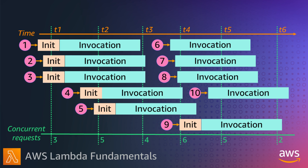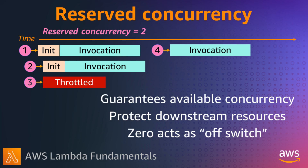There are some controls you can use to manage concurrency with some helpful use cases. You can use reserved concurrency to allocate a maximum concurrency limit for a given function — a maximum number of requests a function can run in parallel. Here I've set reserved concurrency to two. This does two things: it protects and ensures that a function is always able to scale up to the reserved concurrency value, and other functions can't use this concurrency from the shared account pool. It also acts as a limit on the maximum function concurrency to protect downstream resources.